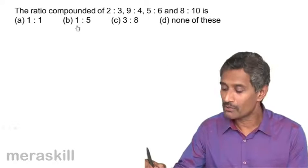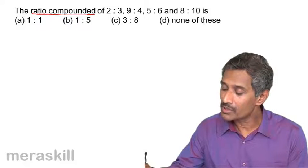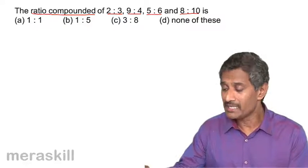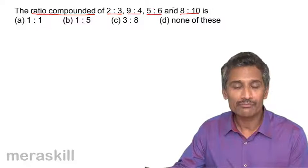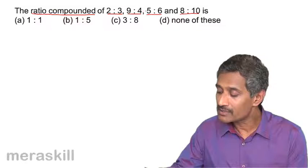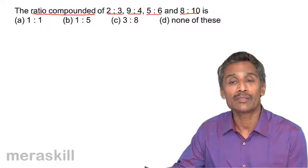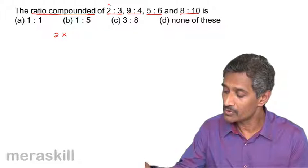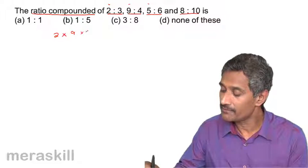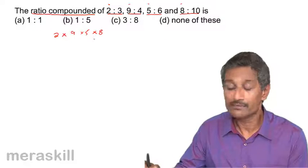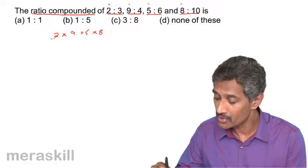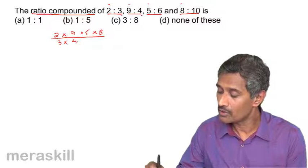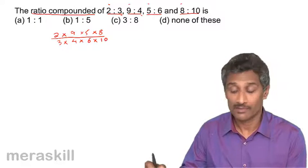Now here we have something a little more complicated. The ratio compounded of 2:3, 9:4, 5:6, and 8:10. To find the compound ratio, you multiply the first terms of all ratios to get the antecedent, and multiply the second terms (consequents) to get the denominator. So it's going to be (2×9×5×8) upon (3×4×6×10).